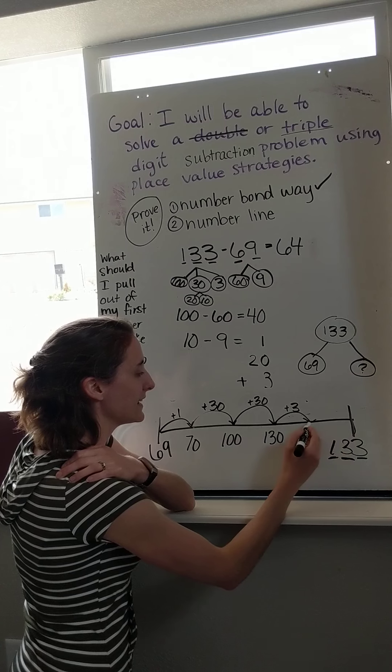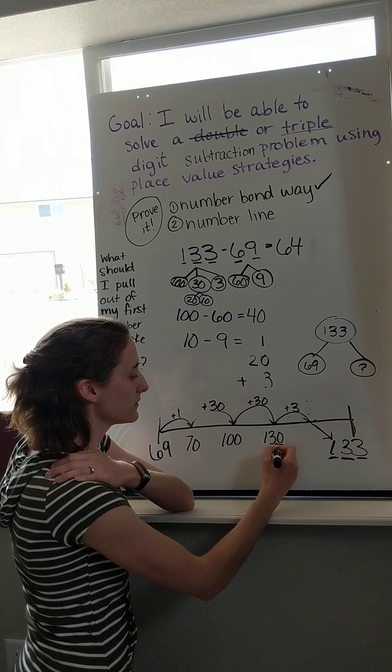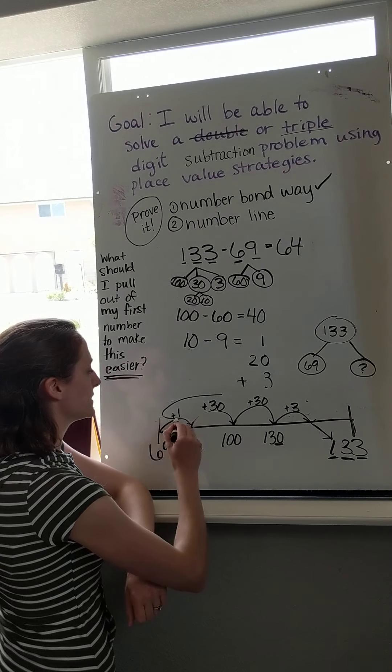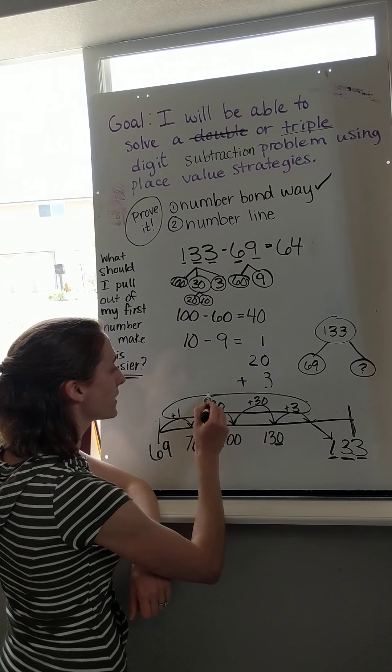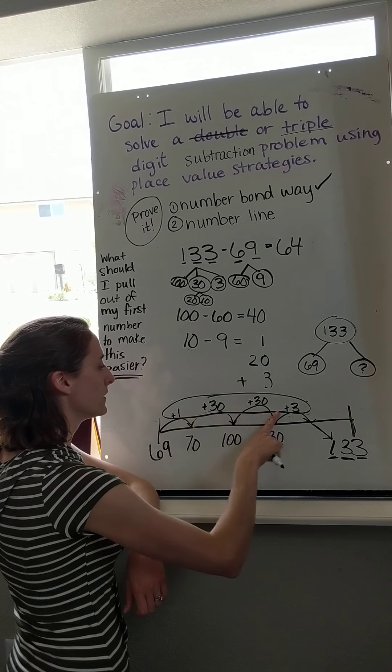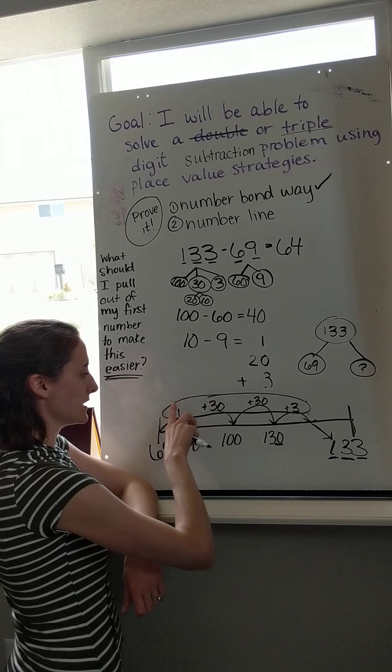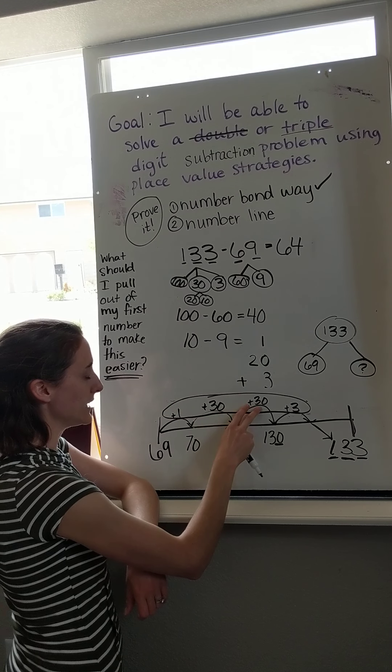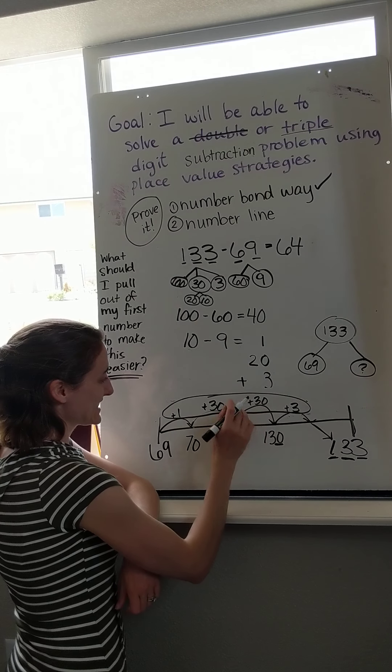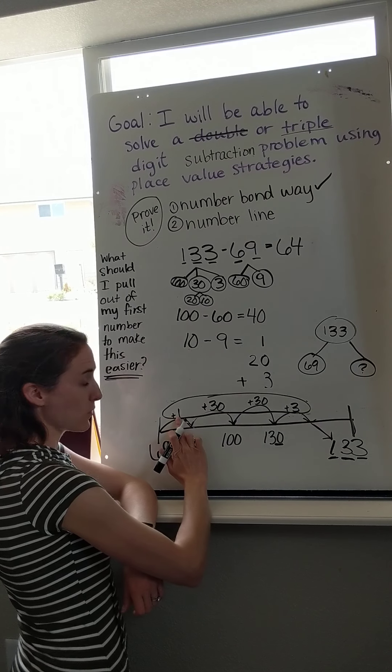So 100 plus 30 is 130. And then I need 3 ones. Plus 3 more ones. And I finally got to 133. Because 130 and 3 more ones makes 133. Now I just look at what's on top. And this part is my missing part. Because 69 plus something made 133. So what are all of these jumps on top? 30 plus 30. That's like 3 plus 3. 3 tens plus 3 tens is 6 tens. That's 60. Plus 3 more is 63. Plus 1 more one is 64.